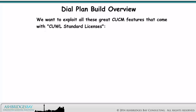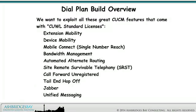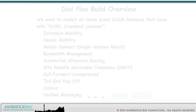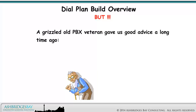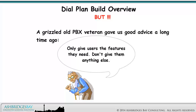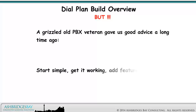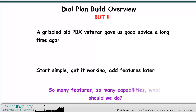We want to exploit all the great CUCM features that come with cool standard licenses. A grizzled old PBX veteran gave us good advice a long time ago: only give users the features they need, don't give them anything else. Start simple, get it working, add features later. So many features, so many capabilities — what should we do?